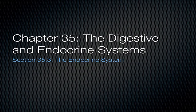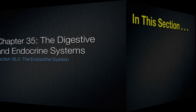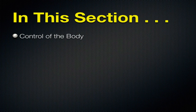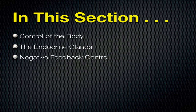In the last section, we are going to talk about the endocrine system. This is section 35.3, the endocrine system. In this section, we are first going to talk about control of the body, how that happens. Then we're going to talk about the endocrine glands, because those play a significant role in controlling the body. And then we're going to talk about negative feedback control, and we're going to give some specific examples of this negative feedback control.